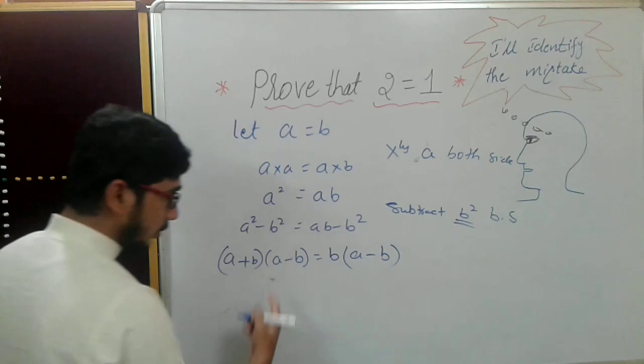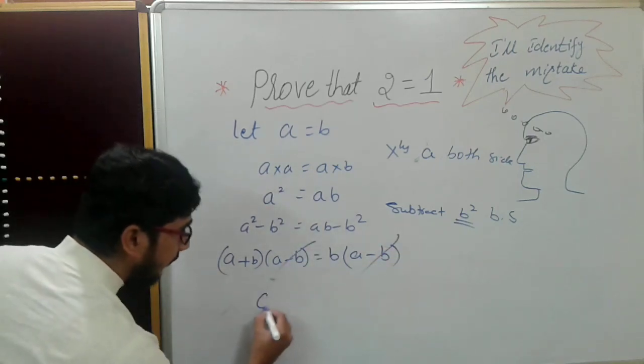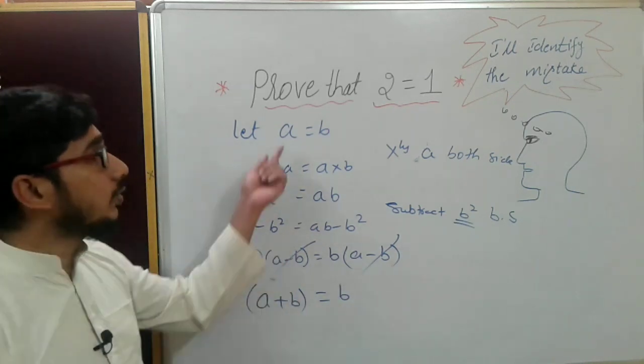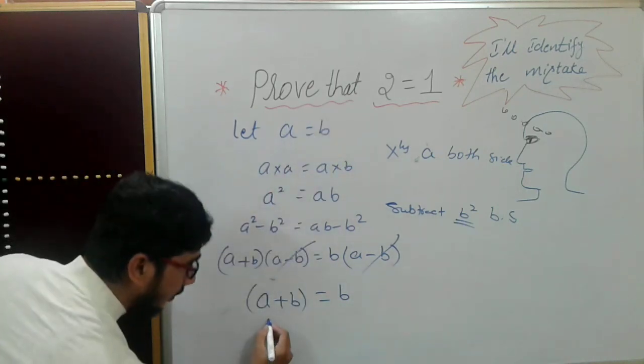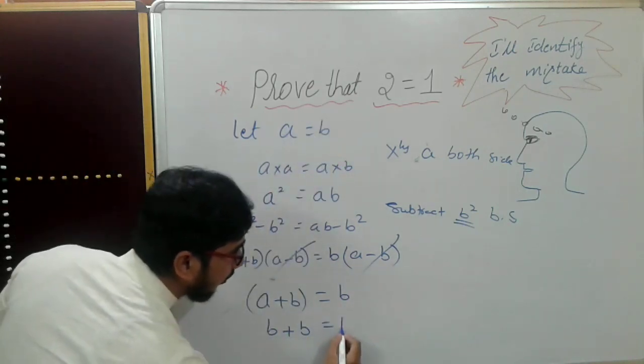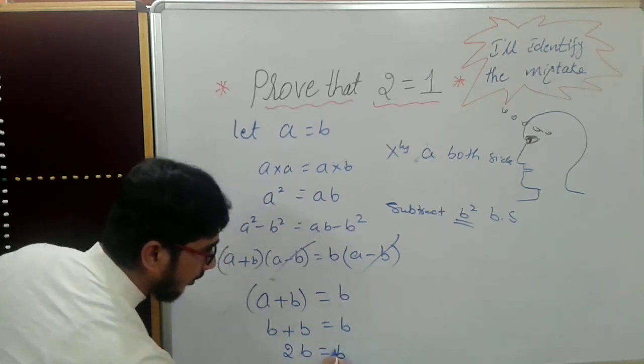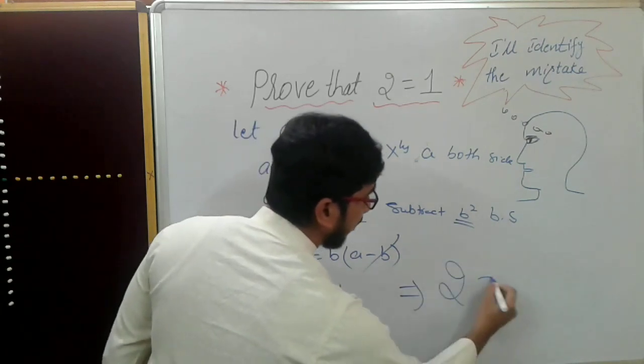So what is remaining now? (a+b) which is equal to b. But I know that a is equal to b, so I will replace a with b here. So b+b is equal to b. b+b—how much? 2b is equal to 1b. So b gets canceled, which implies 2 is equal to 1.